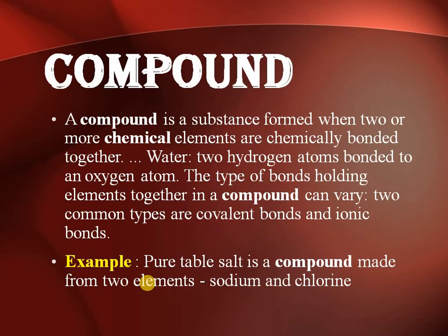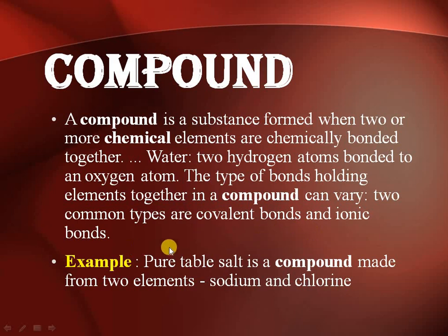So all compounds are molecules. Moving to the proper definition: a compound is a substance formed when two or more chemical elements are chemically bonded together. In water, two hydrogen atoms are bonded to one oxygen atom. The type of bond between elements is commonly a covalent bond or ionic bond — in compounds, mainly these two types of bonds exist.